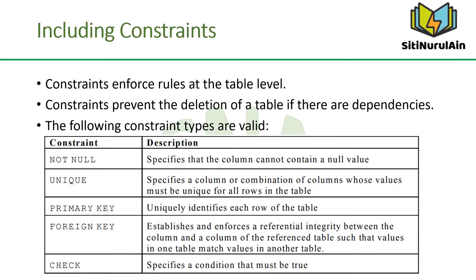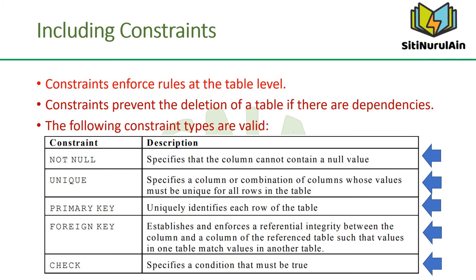The Oracle server uses constraints to prevent invalid data entry into tables. You can use constraints to enforce rules on the data in a table whenever a row is inserted, updated, or deleted — the constraint must be satisfied for the operation to succeed. Constraints prevent the deletion of a table if there are dependencies from other tables, and provide rules for Oracle tools such as Oracle Developer. The valid constraint types are: NOT NULL, UNIQUE, PRIMARY KEY, FOREIGN KEY, and CHECK.